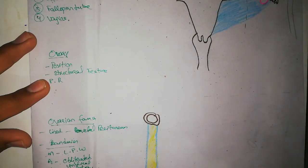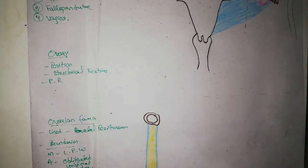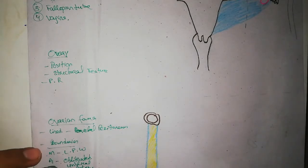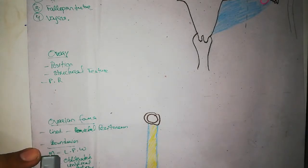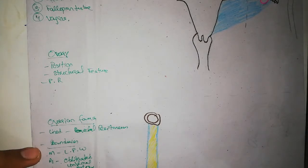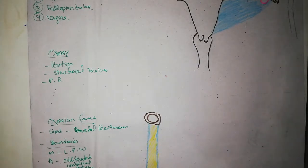The ovarian fossa is a shallow depression on the lateral pelvic wall, lined by parietal peritoneum. Its boundaries are: anteriorly the obliterated umbilical artery, medially the lateral pelvic wall, and posteriorly the ureter and internal iliac vessels.